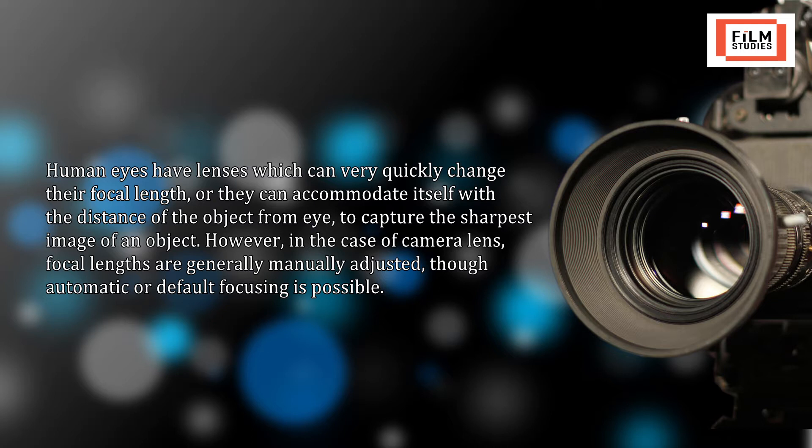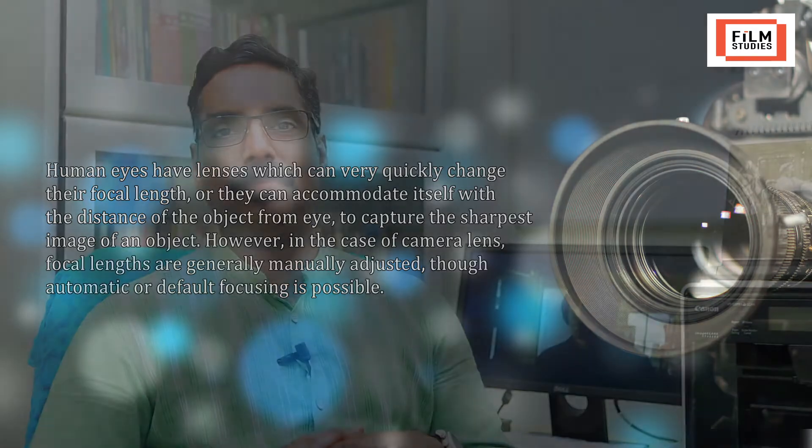In the case of camera lenses, focal lengths are generally manually adjusted, though automatic focusing is possible. The most important capability of the human eye is that by default human eyesight is three-dimensional (3D), indicating three quantitative properties: width, height, and depth. Images captured with a photographic camera have only two dimensions — height and width — making the image 2D.